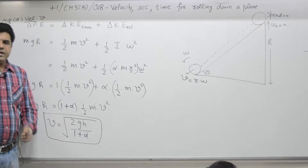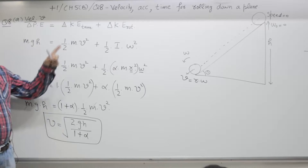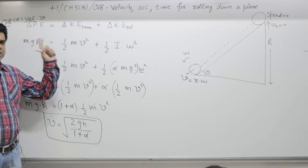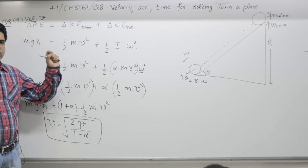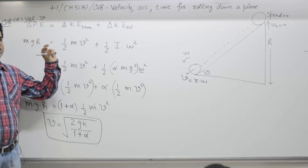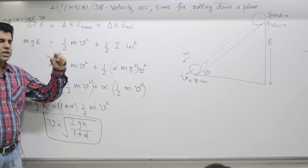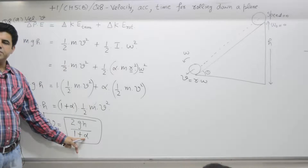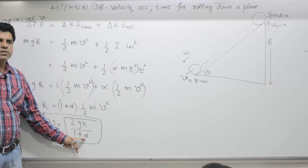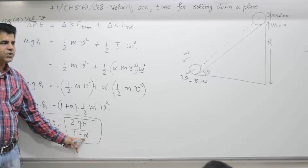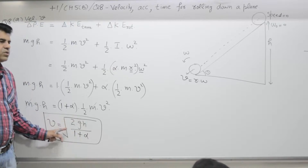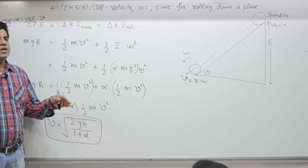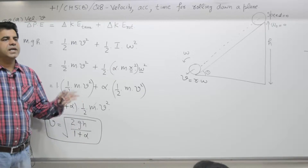To confirm: if the object does not roll, the rotational effect is zero, meaning α = 0. If you put α = 0 in the expression, you get v = √(2gh), which is the case for sliding.